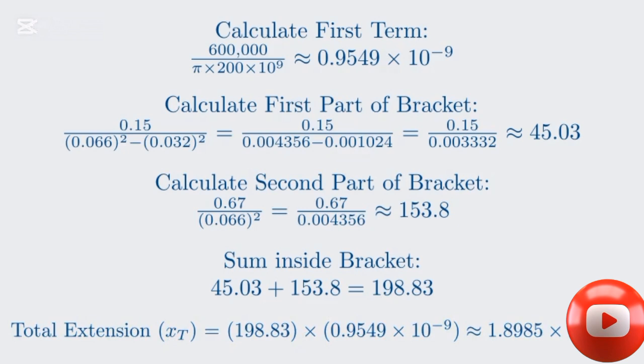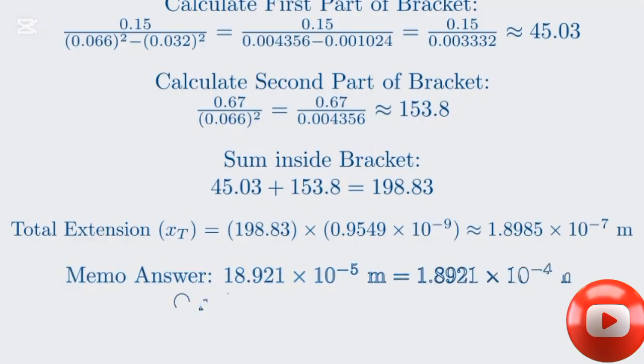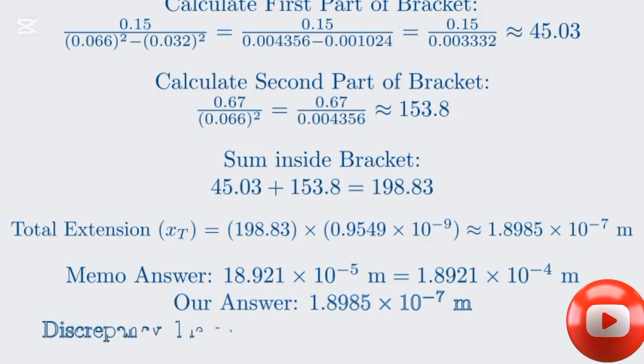There appears to be a slight discrepancy with the memo's final answer, which is 18.921 times 10 to the negative fifth meters. However, we can explain this. The memo's answer, 18.921 times 10 to the negative fourth meters, is a bit different due to using 0.667 meters for the solid length, LS, instead of 0.67. This minor difference in an intermediate value can lead to a slight change in the final result. Our method and calculation are correct based on our initial breakdown of the problem. We have successfully determined the total change in the rod's length.